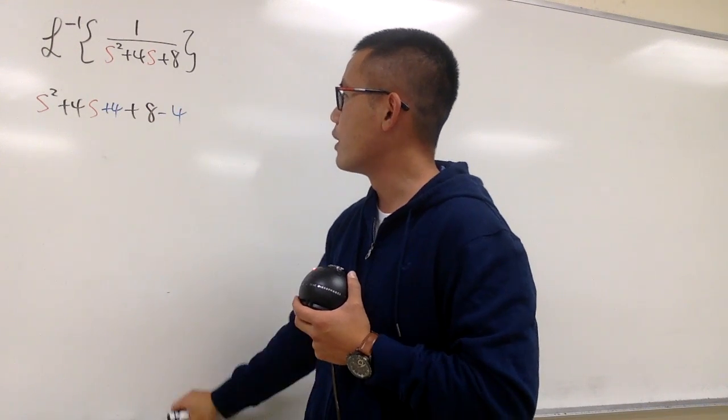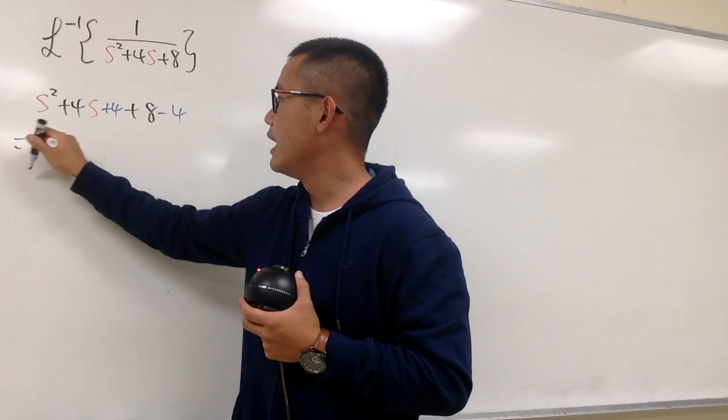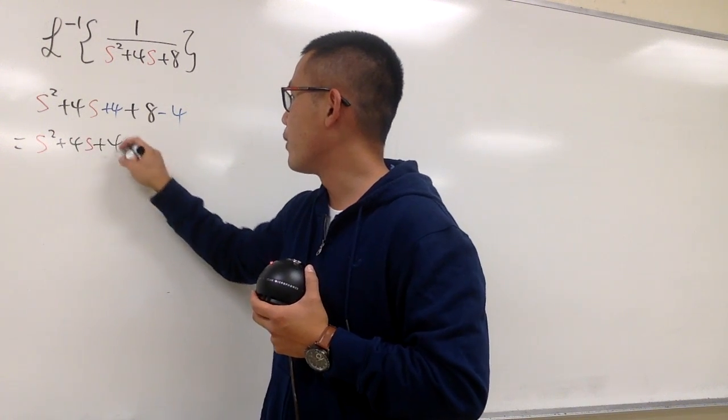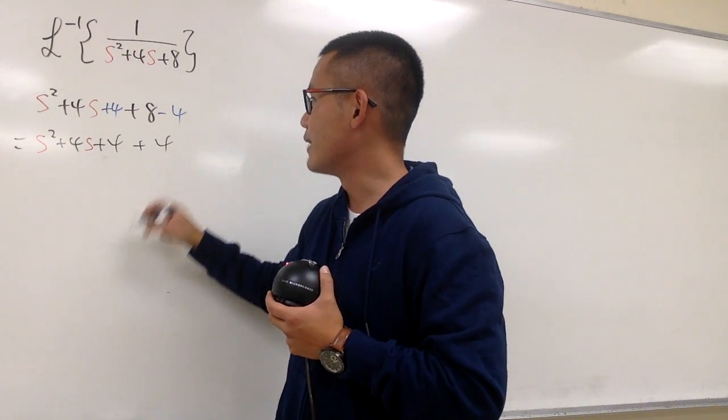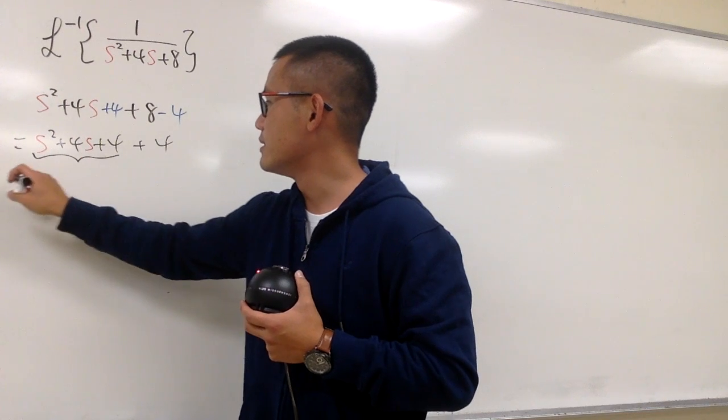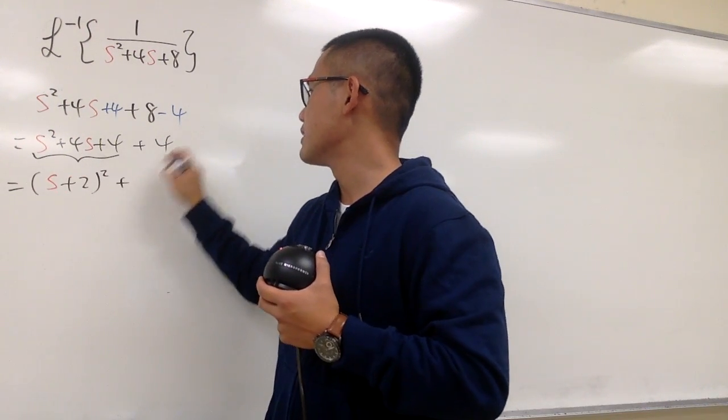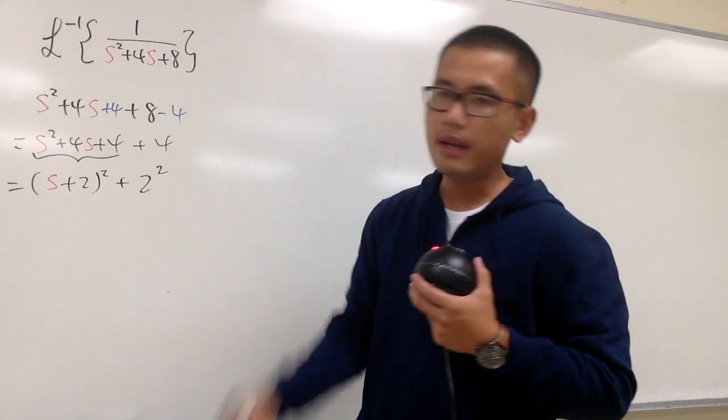And then don't forget to immediately minus 4. So in other words, you're looking at this as s squared plus 4s, and then plus 4, and this is plus 4. And then this right here, it's nice. It's just s plus 2 squared plus 4 is the same as 2 squared, and that's the bottom.